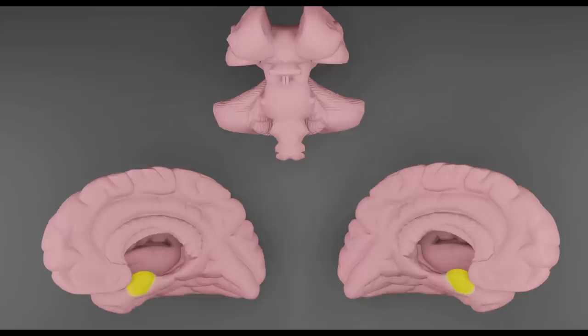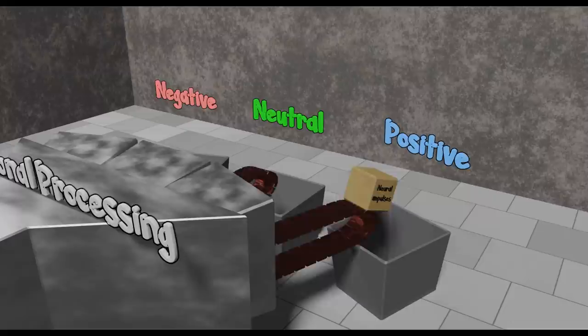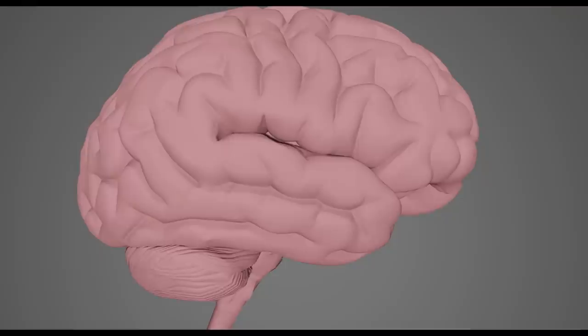We're going to focus on this little region here called the amygdala, the emotional processing region. Your amygdala dictates whether memories and sensations are positive or negative. And this is the region where neurologists suspect most of the impact from alcoholism occurs.